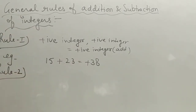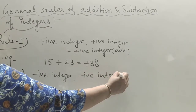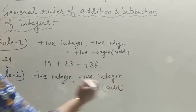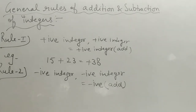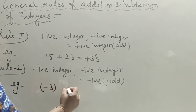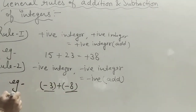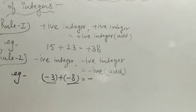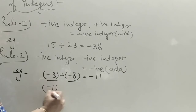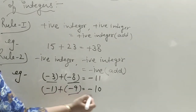Rule two: if both are negative integers, the answer is also negative. Add both numbers and put a minus sign. For example, minus 3 plus minus 8 — add 3 and 8 to get 11, answer is minus 11. Similarly minus 1 plus minus 9 equals minus 10.